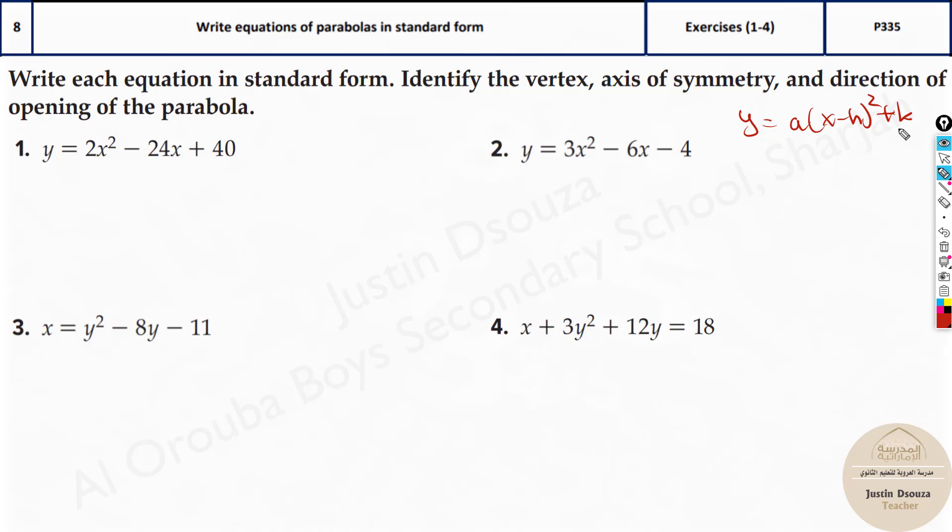Here, why do we need the standard form is we can easily get the h and k, that is the vertex values. h and k can be easily found out.